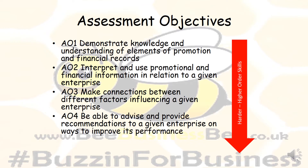AO3 is analysis — making connections between different factors, inferencing and organisation of an enterprise. And AO4 is what we'd call evaluation, where you are able to advise and provide recommendations to a given enterprise on how it can improve its performance. That's how your paper is marked, and you clearly want to demonstrate as much AO4 as possible to get the highest possible grade.